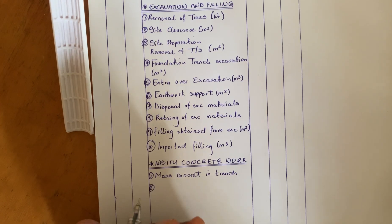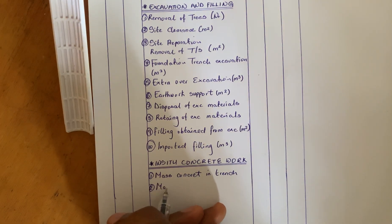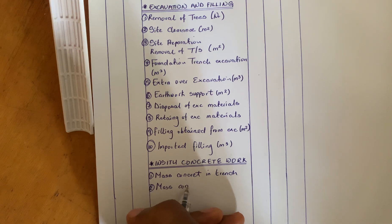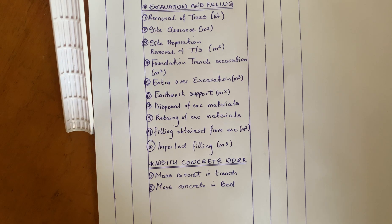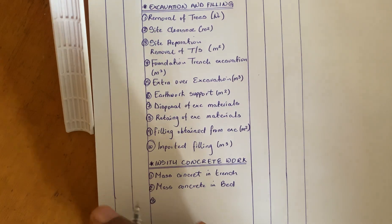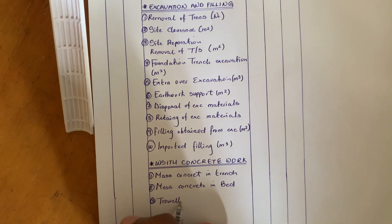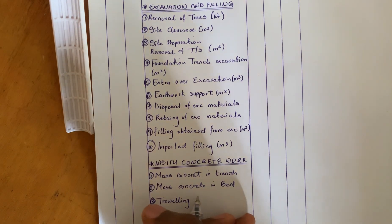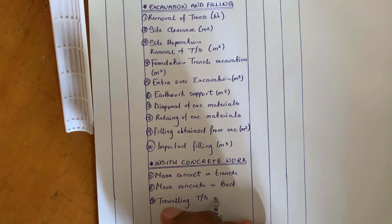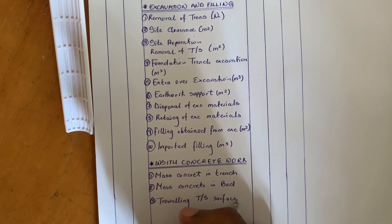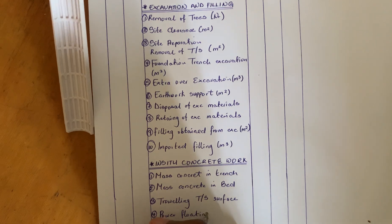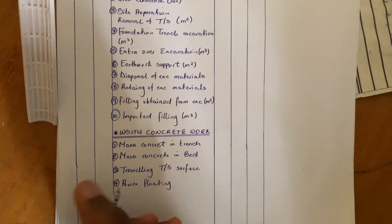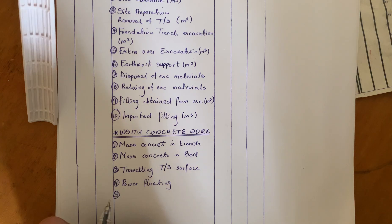The second item in in-situ concrete work would be mass concrete embed — this is the concrete poured to create the floor slab. Number three would be steel troweling the topsoil surface. Next on the list is power floating, and last in in-situ concrete work would be formwork.